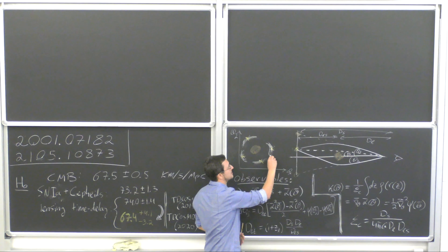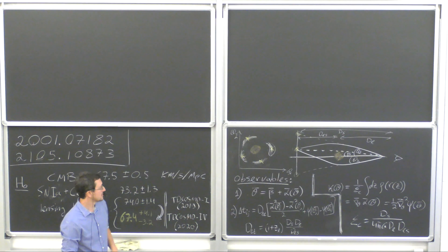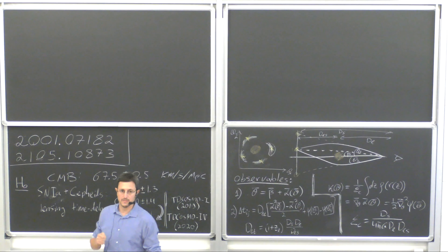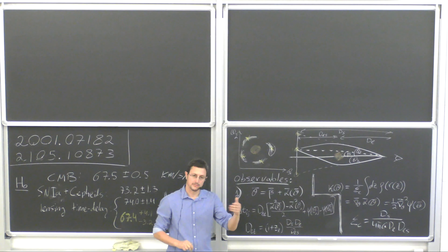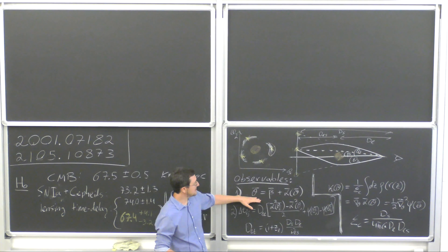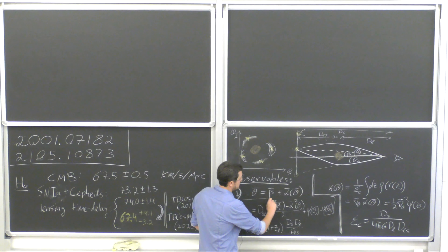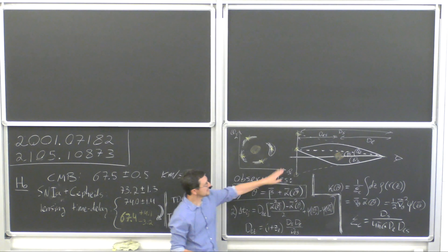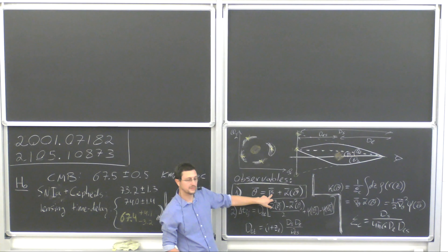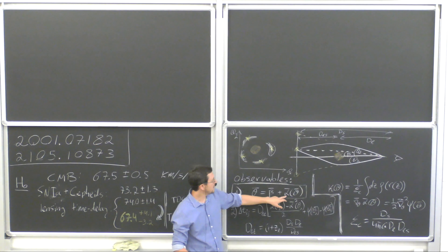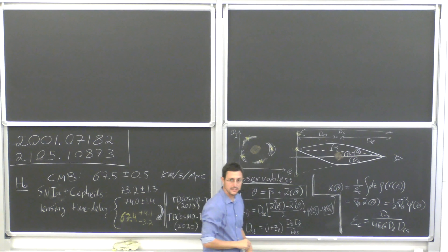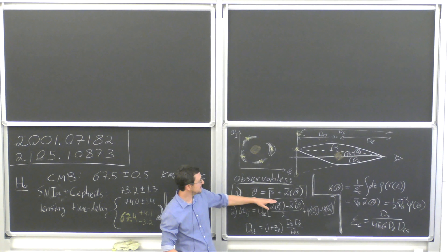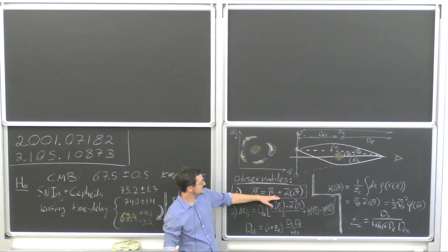There are two observables you must have to turn this into a measurement of H0. Observable number one is basically the pixel map — the image. We have a set of pixels theta (vector in 2D) that are illuminated, and our lensing model reconstruction problem amounts to solving the lens equation: finding some model for the true source position beta, and adding to this the deflection angle alpha, which is the gap between the observed angle theta and the assumed source position beta.